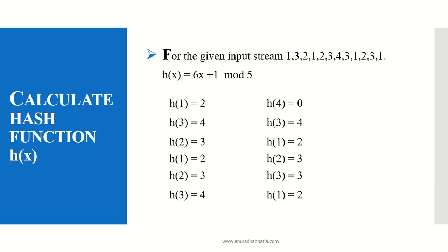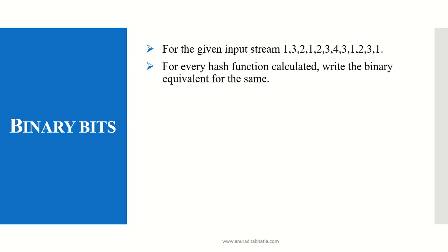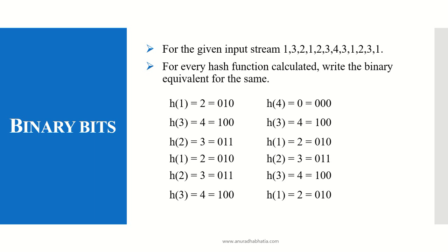Now after calculating the hash function, we will do the binary bit calculation. We all know how binary bits are substituted. We will have to write the binary equivalent for every hash function. After having the output from the hash function, that is h(1) = 2, we write down the binary equivalent for the hash function. Similarly we do it for all the bits that we calculated.